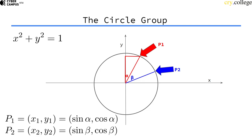So if we have two points, for example P1 and P2, those can be represented with their coordinates, that's the x-coordinate and the y-coordinate, or with angles from the y-axis.